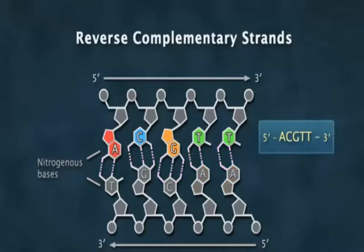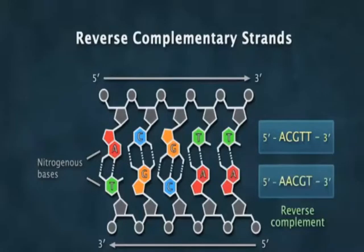Now a beautiful little feature of knowing this hydrogen bonding pairing rules is that if you know the sequence on one strand of DNA you automatically know the sequence on the other strand of DNA. So if this reads A, C, G, T, T, five prime to three prime, on the other strand going the other direction it's going to read A, A, C, G, T.